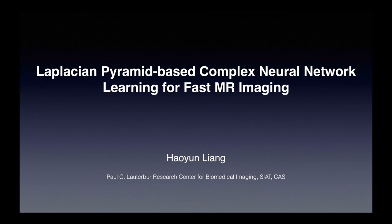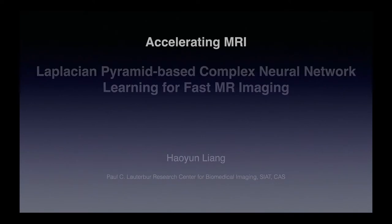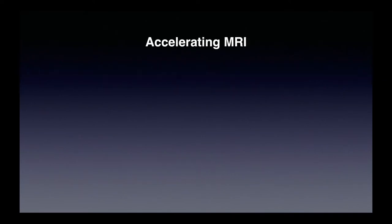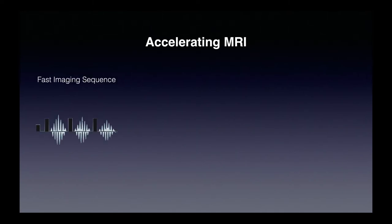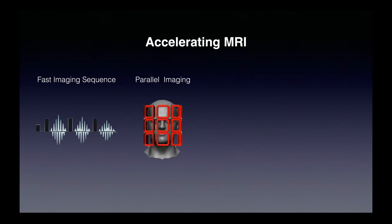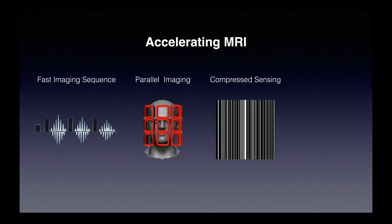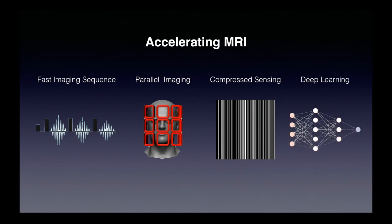As a result, many kinds of accelerating methods are proposed and have gone through four stages: first, the fast imaging sequence; then parallel imaging; third, compressed sensing MRI; and now deep learning MRI.